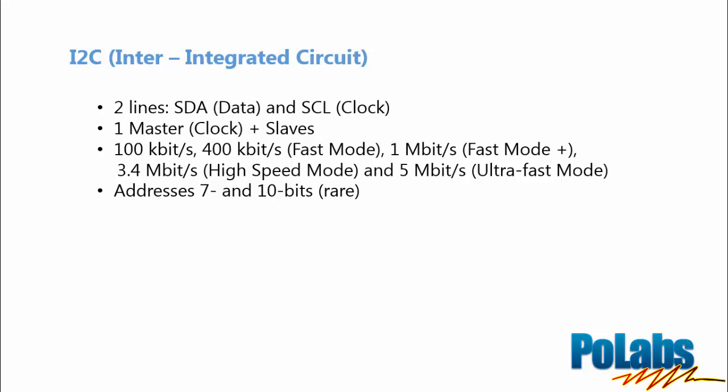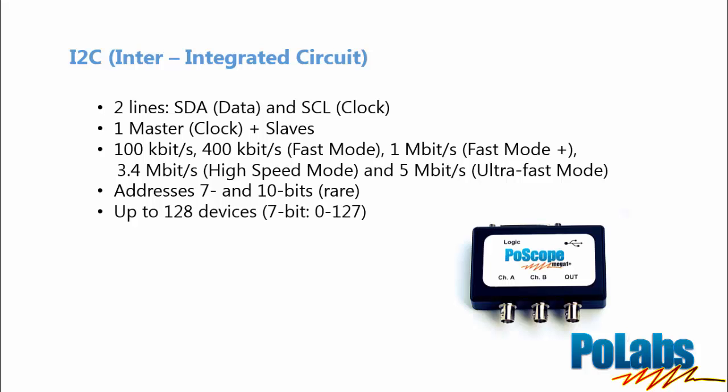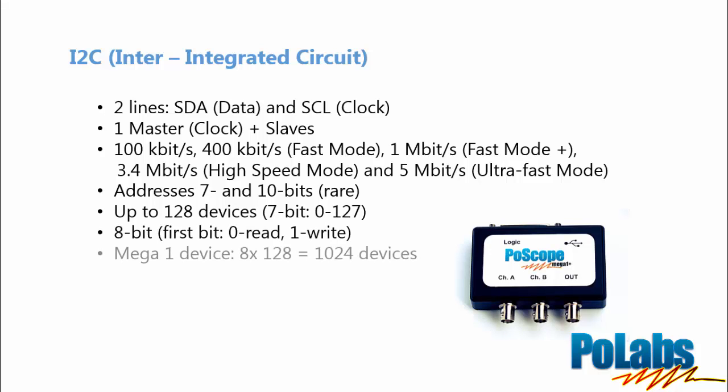I2C mostly uses 7-bit addresses which are actually 8-bit because the first bit describes whether the master is reading or writing to the slave address. MegaOne has the ability of decoding eight I2C buses simultaneously. Each bus can hold up to 128 devices, therefore the MegaOne can connect up to 1024 devices.